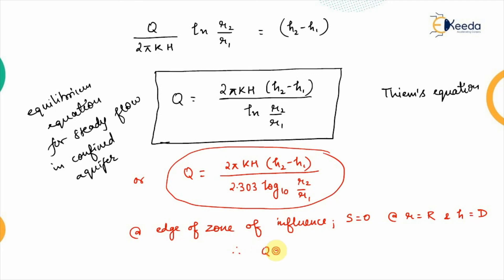So, q will be equal to 2πkh into h2 minus h1 so this will be saturation drawdown divided by ln capital R upon the saturation r. This can also be written in this form.